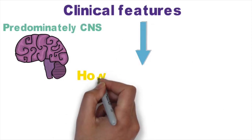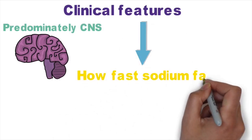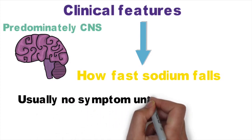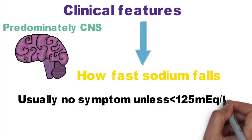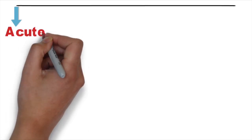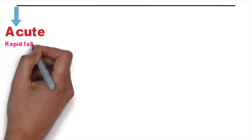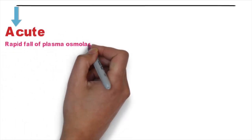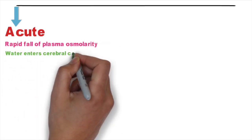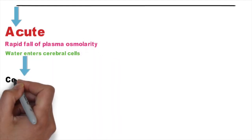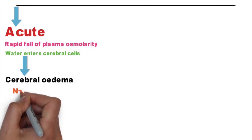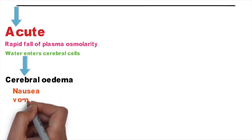Generally there are no symptoms unless sodium drops below 125 mEq per liter. In acute hyponatremia, there is a rapid fall of plasma osmolarity, so water flows into cerebral cells. When plasma osmolarity decreases below that of cerebral cells, water enters cerebral cells and there will be cerebral edema and ischemia. Patients develop anorexia, nausea, vomiting, confusion, lethargy, and even seizure and coma.